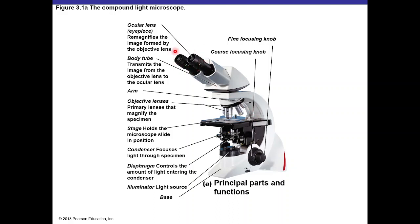At the top of the microscope is the ocular lens, which magnifies the image ten times. It is attached to the eyepiece, which connects to the body tube. The body tube transmits the image from the objective lenses attached to the nosepiece. The objective lenses gather the light and transmit it through the body tube to the ocular lens, where you place your eye to view the image.